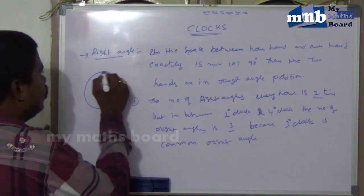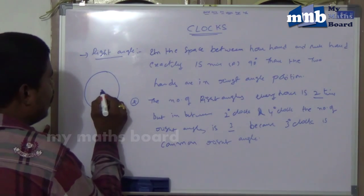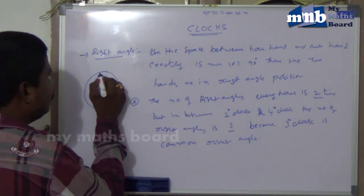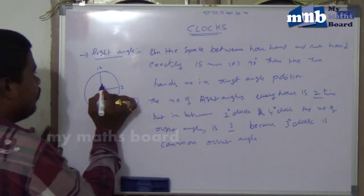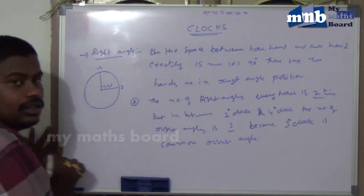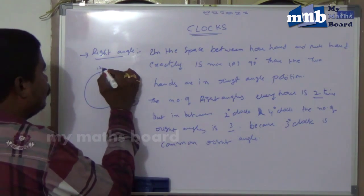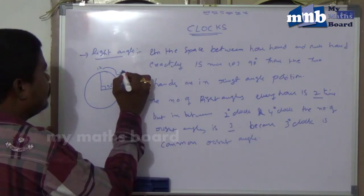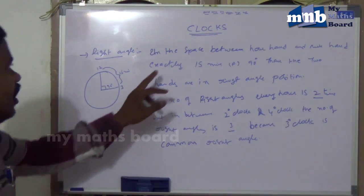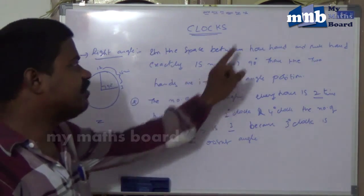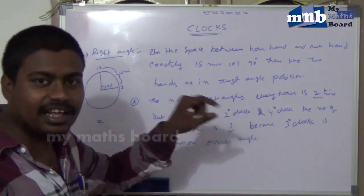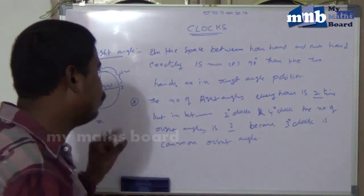For example, on a clock face at 3 o'clock with the minute hand at 12, this type of position is called the right angle position — 15 minutes gap or 90 degrees between the hour hand and the minute hand. The two hands are in the right angle position.